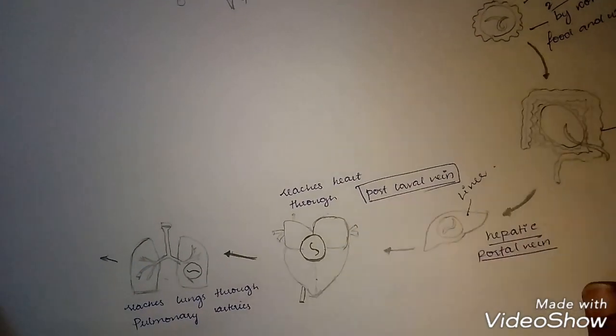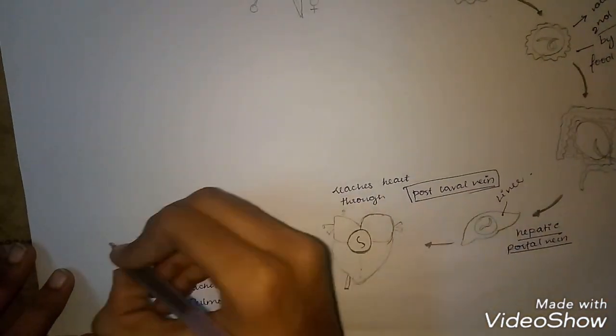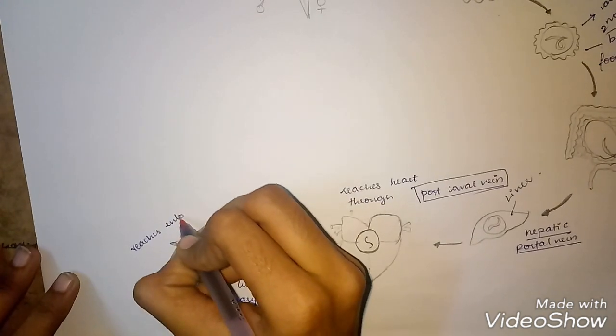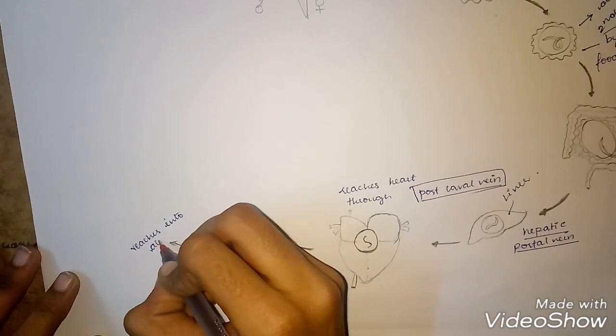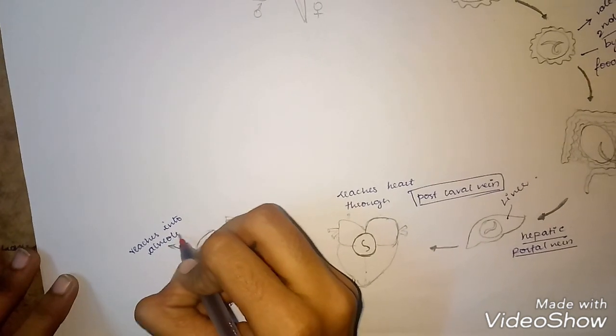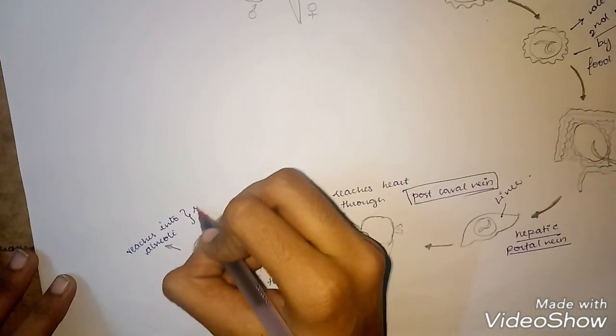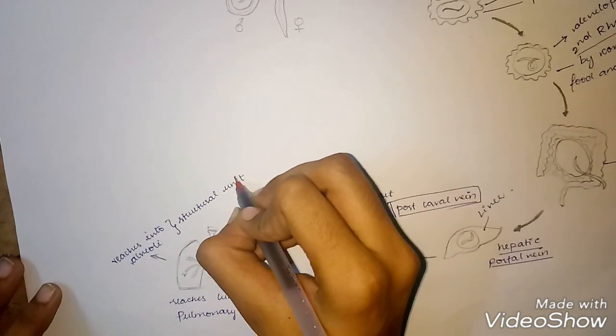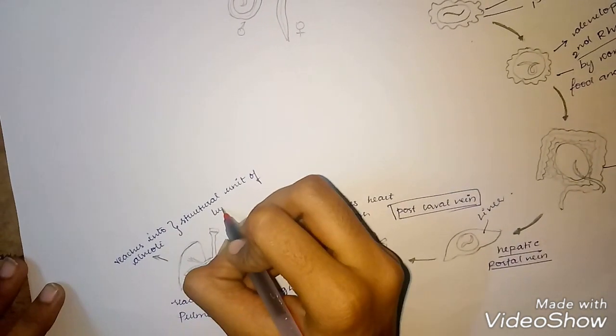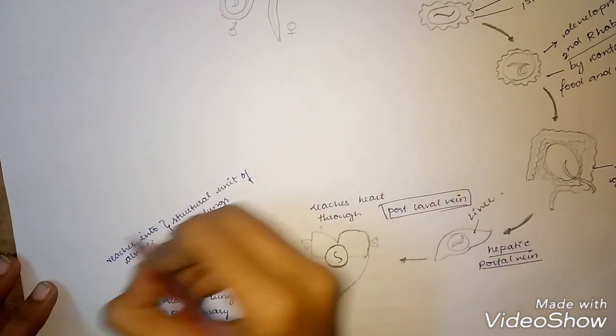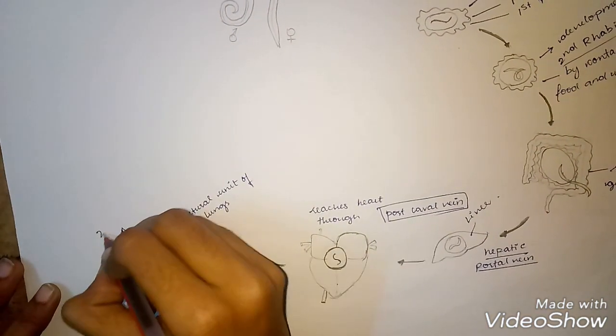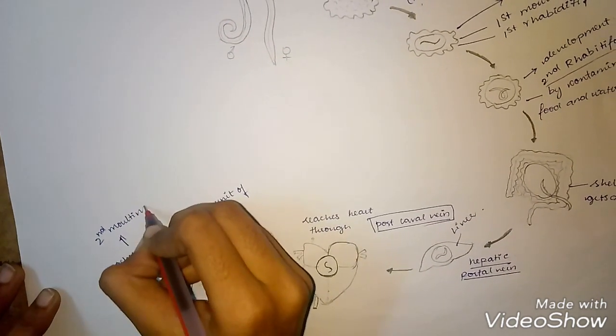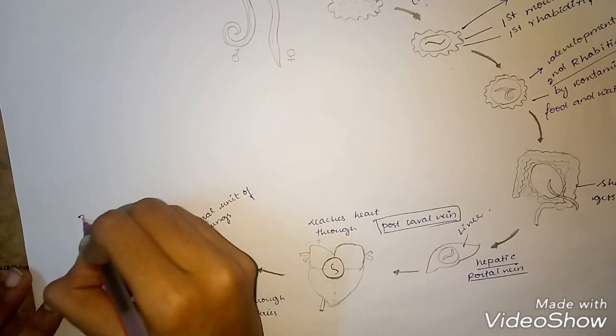After the pulmonary arteries, the larvae reach the alveoli, which are the structural units of the lungs. Here they undergo second molting and form the third larval stage.